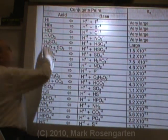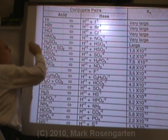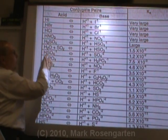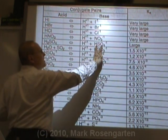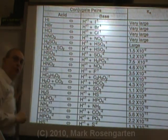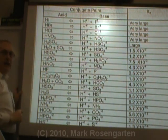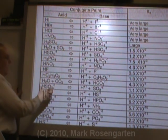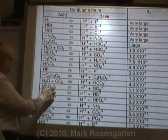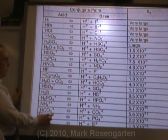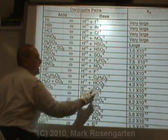Some substances can only be found on the acid side of the table. But if a substance contains H and a negative charge — like HSO4- — not only can it act as an acid, but it also appears on the base side too, so it can act as either an acid or a base. Similarly, HSO3- appears as both an acid and a base, as does HCO3-.